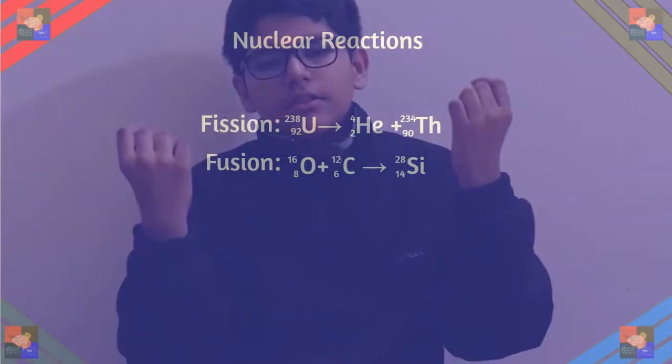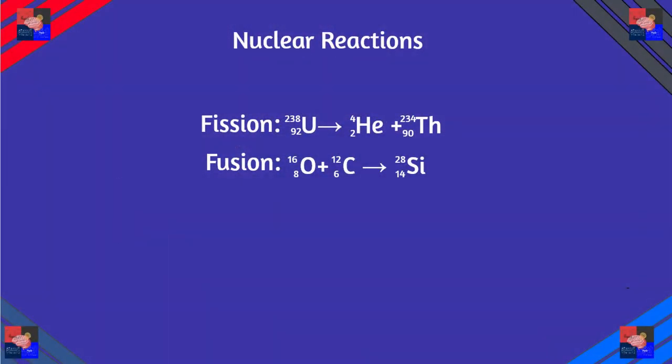Nuclear energy is the energy released when the protons and neutrons in an atom are removed. There are two ways to do that: nuclear fission and nuclear fusion. Nuclear fission is when a large atom is broken down into two or more smaller atoms, while nuclear fusion is when two atoms are fused together to form one atom — creating lots of energy in the process.